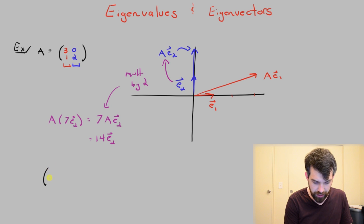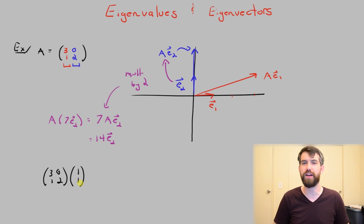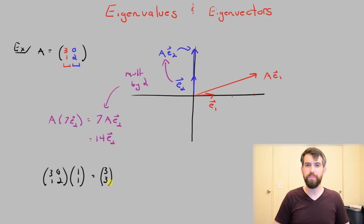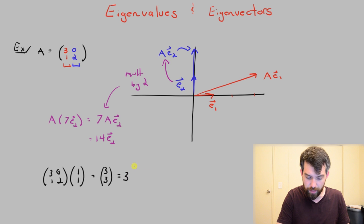Let me take this matrix (3,1; 0,2) and I'm going to multiply it to the vector (1,1), because I've already played around and I know that this vector is going to have this nice property. Well, we can multiply this out and this is going to go to the vector (3,3). And then (3,3) is just the same thing as a multiplication by 3, the scalar 3, to that (1,1).